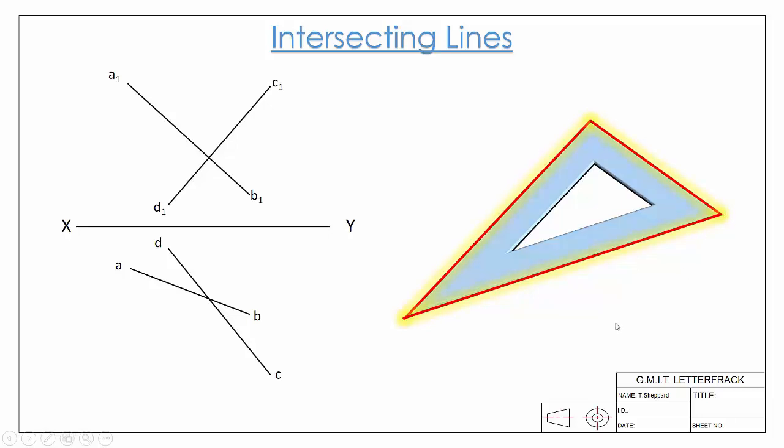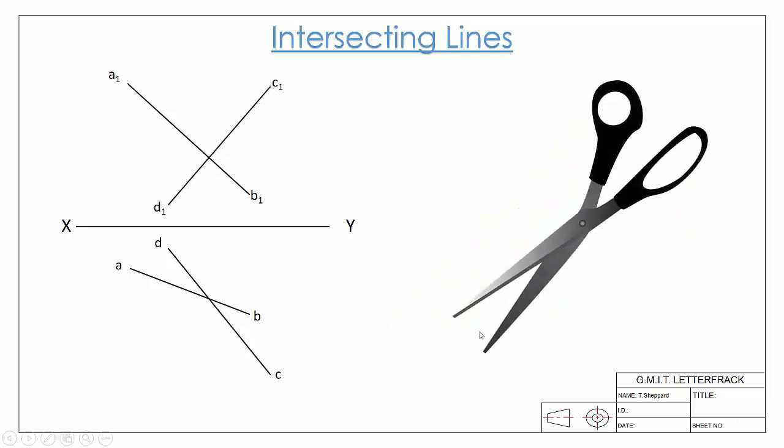Another example would be the cutting edge on scissors - there are two cutting edges that actually touch and cross here at this point of intersection. Like with our parallel lines...